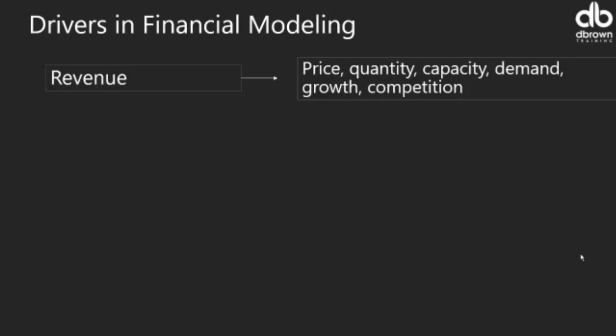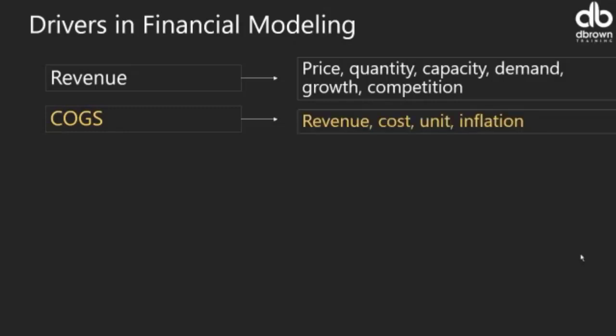Demand is important too — if purchasing power is high, you tend to sell more. For startups, it's always easy to break things down into price and quantity. For mature companies, it might be difficult, so we use what we call a growth rate. Competition is also a factor — if your business is doing well, expect competition to come into play.